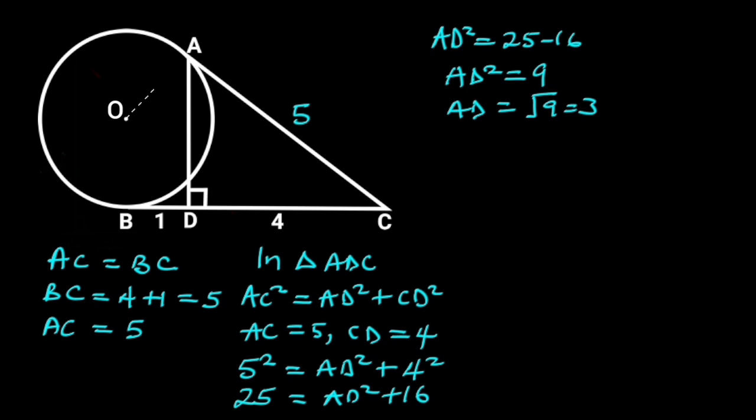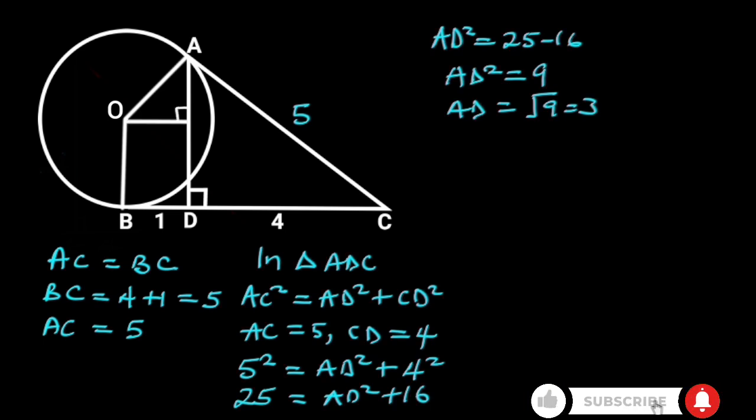Next, let's draw a straight line from O to A, O to B, and a perpendicular line from O to line AD. Note that OA and OB are radius of the circle.